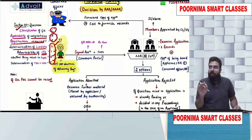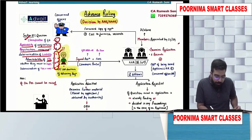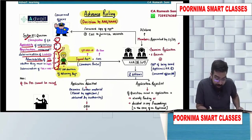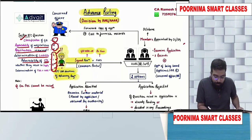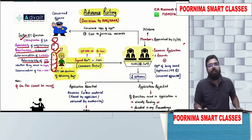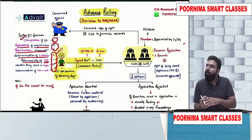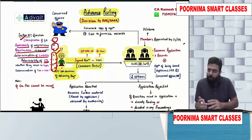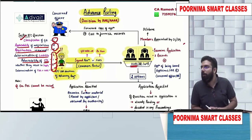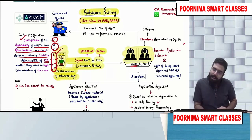And T means determination of time of supply or value of supply. This person will go ahead and file a signed application in GST ARA-01 along with a fees of 5,000 rupees on the common portal. This application will go to AAR, which is a state-wise or union territory-wise body. They have constituted AAR — Authority for Advance Ruling — in every state and UT.